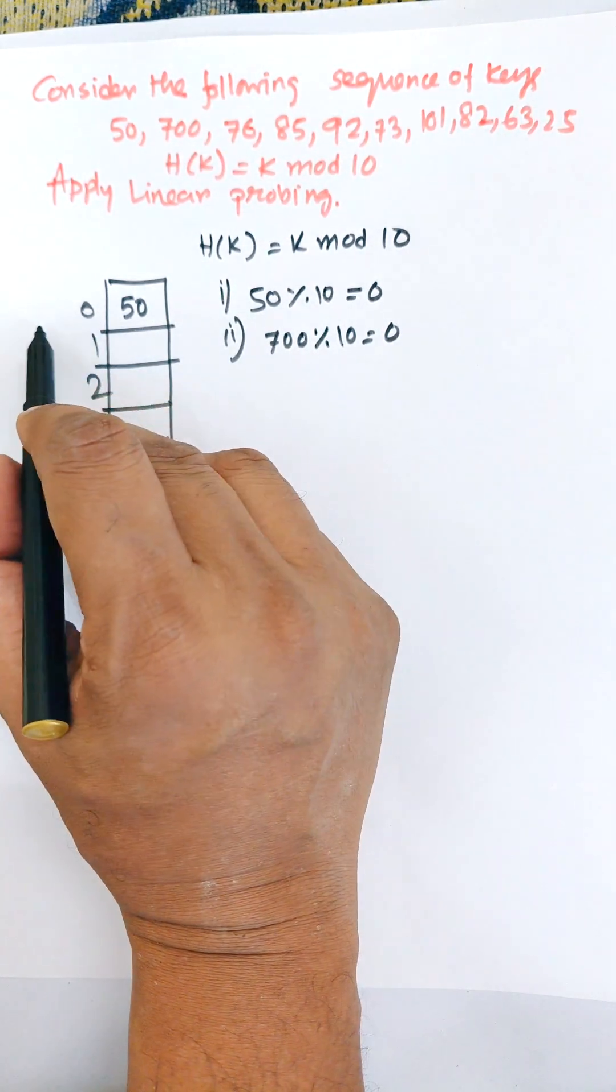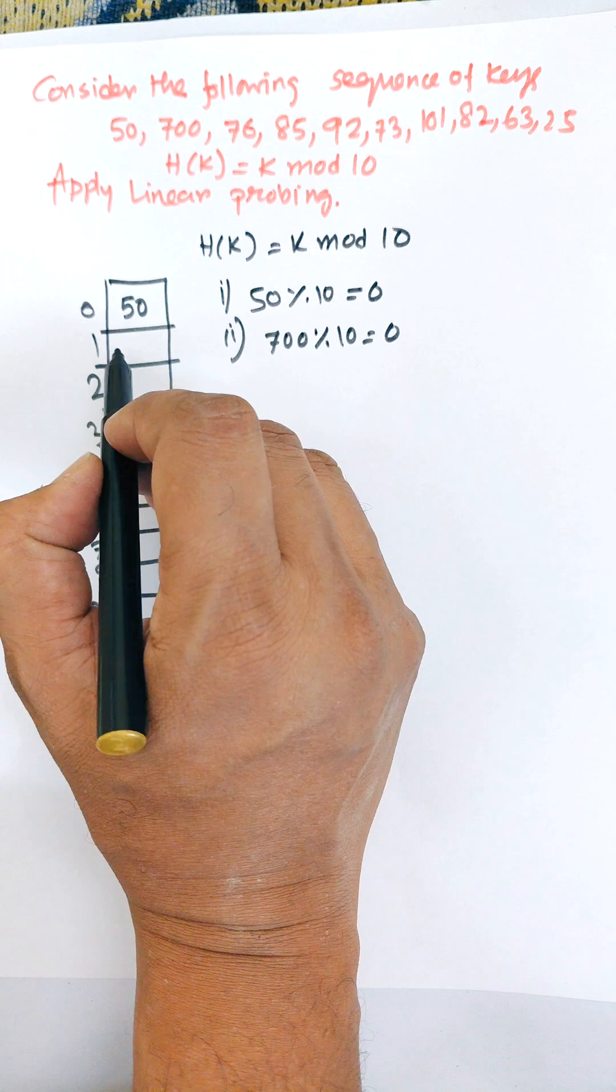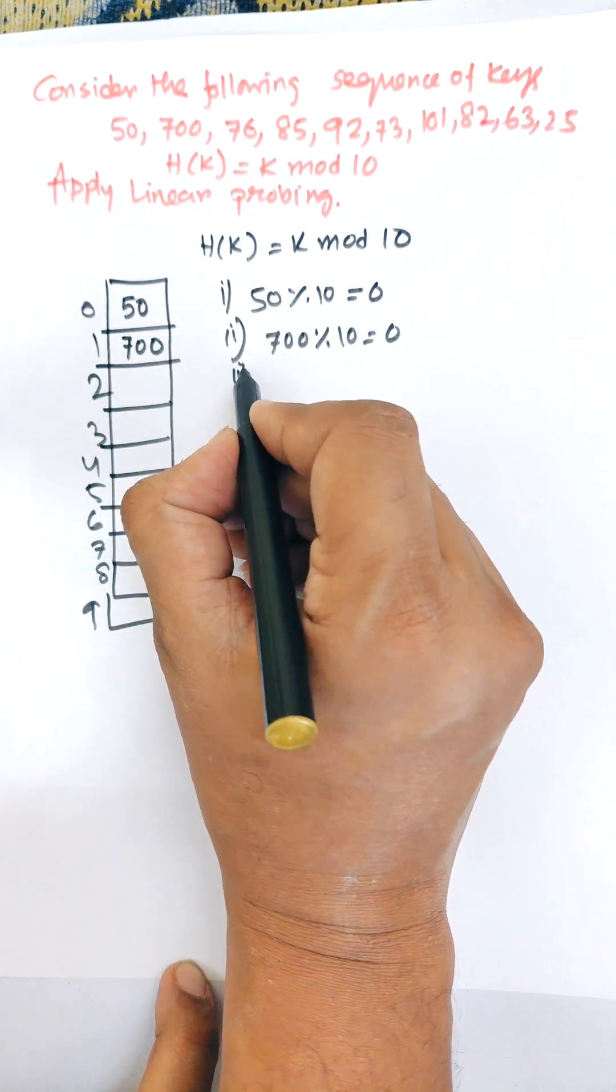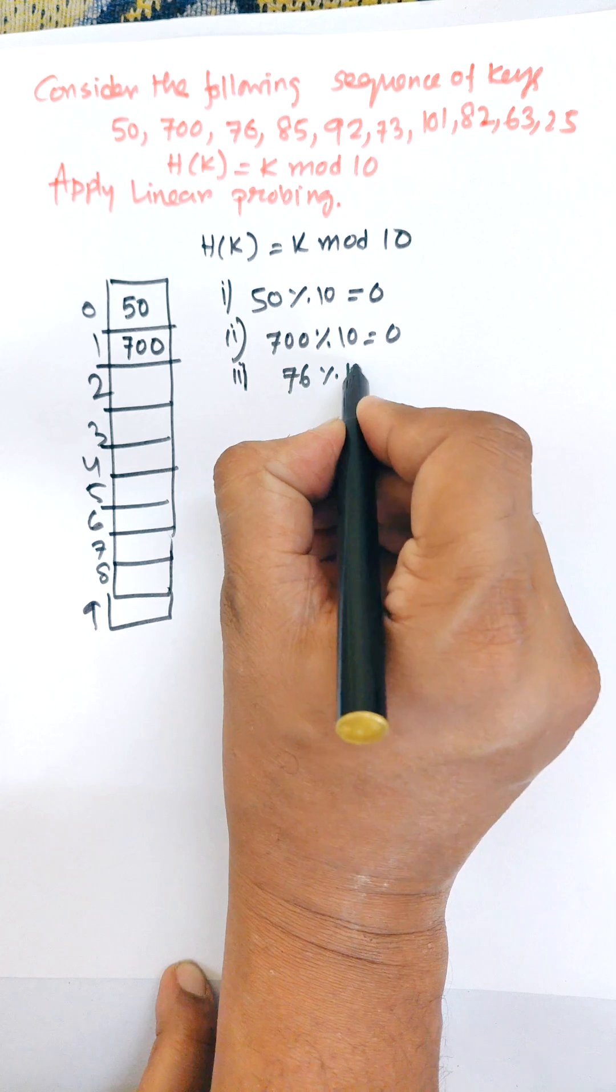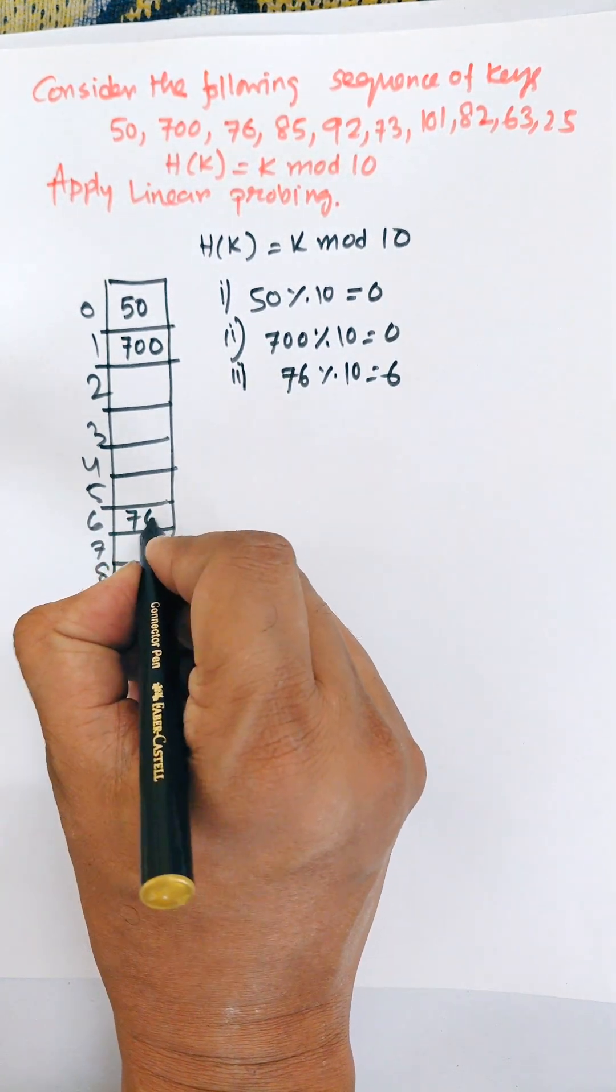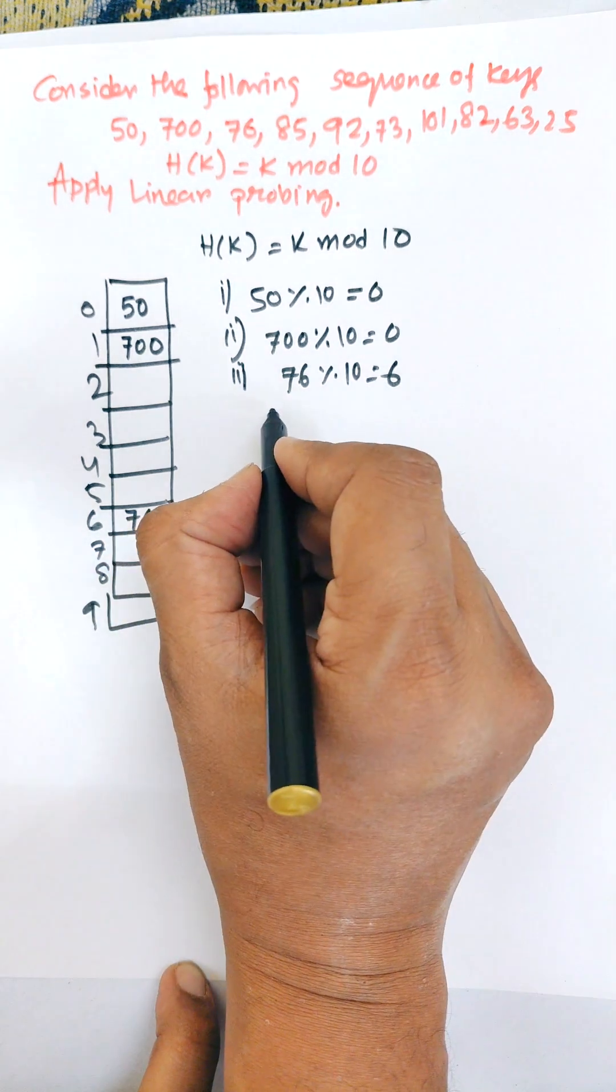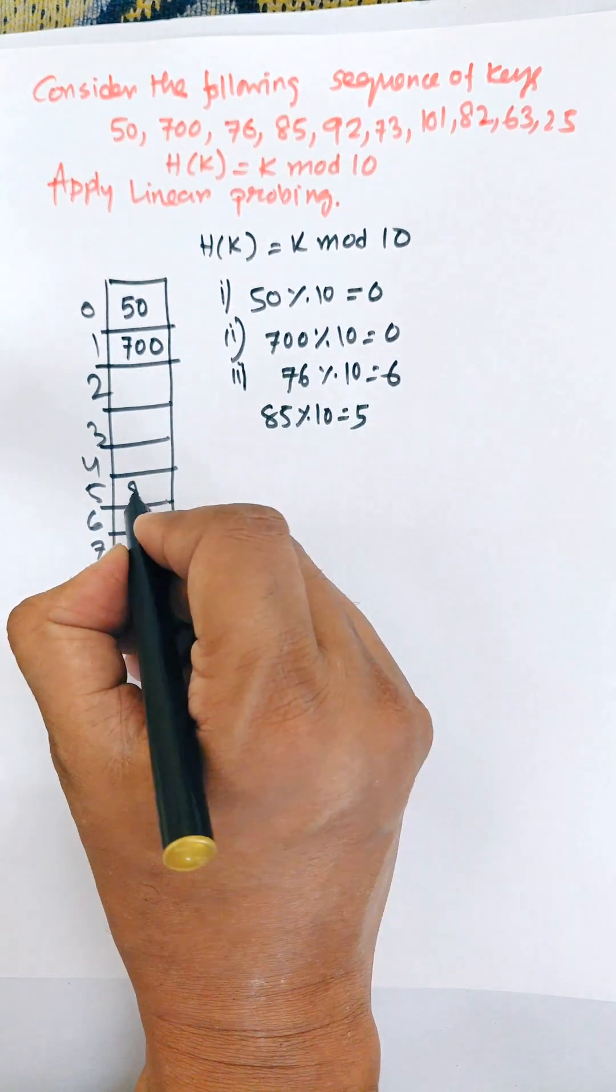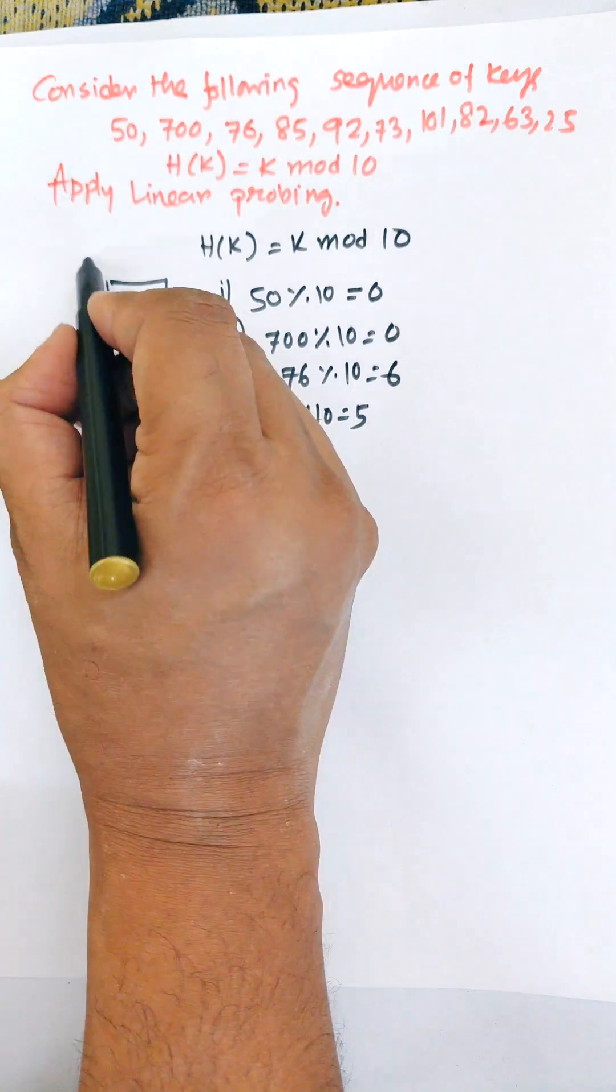In linear probing, when collision occurs, it will choose the next memory location, which is 1. Now the third one is 76 mod 10, which equals 6. There is no collision, so 76 is directly stored in memory location 6. Now 85 mod 10 equals 5, so 85 is allocated in memory location 5.